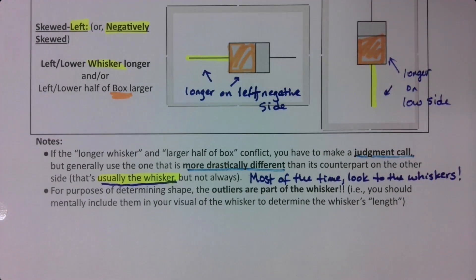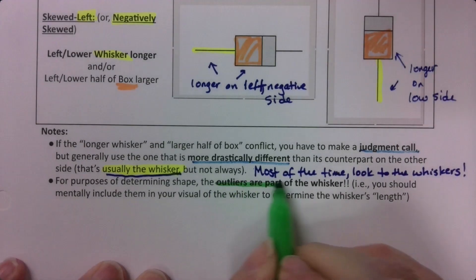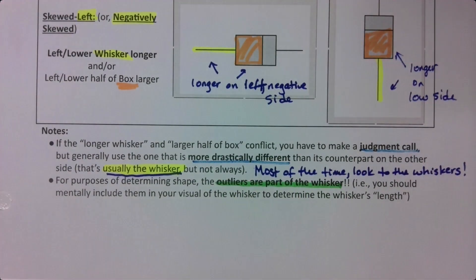Now, part of that, a very important part that a lot of students forget, is that the outlier dots are part of the whisker. Those dots count. So, for example,